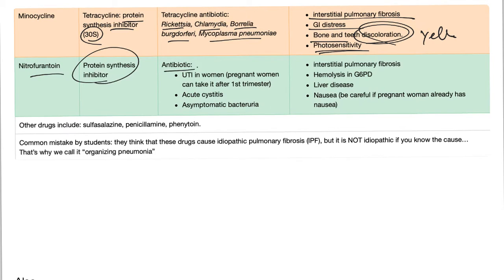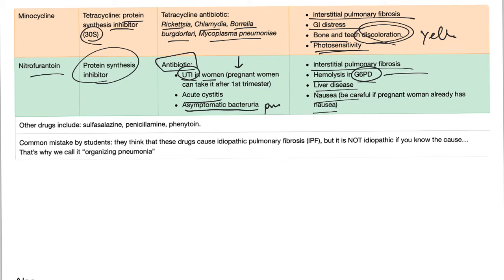Nitrofurantoin is a protein synthesis inhibitor antibiotic used especially in urinary tract infections, especially in women during pregnancy, asymptomatic bacteriuria during pregnancy, and acute cystitis. Side effects include interstitial pulmonary fibrosis, hemolysis in G6PD deficiency, liver disease, and nausea. Other drugs that cause hemolysis in G6PD deficiency include anti-malarial drugs, sulfa drugs, nitrofurantoin, and dapsone. However, the most common cause of triggering hemolysis in G6PD deficiency is infections, not drugs.